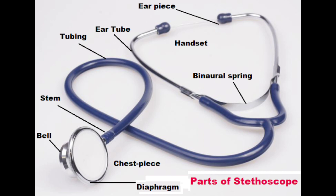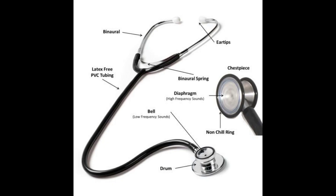A medical stethoscope has three main parts: one, an earpiece; two, a tube; three, a chest piece. More specifically, a stethoscope is made up of a chest piece, diaphragm or bell, stem, tubing, headset, ear tubes, and ear tips.